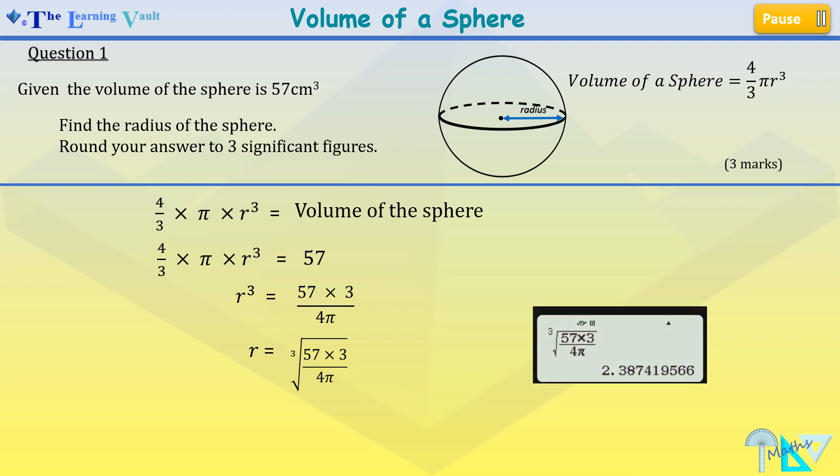Now we type this into our calculator and we get r to be 2.387419566. We've been told to round our answer to three significant figures. So our final answer is 2.39 cm.